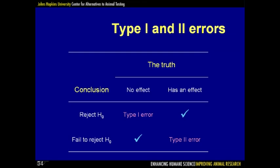Consider this table. The truth may be either that salt water has no effect or that it does have an effect, and there are two possible conclusions: reject the null hypothesis or fail to reject it. If there's no effect and we reject the null hypothesis, we've made a type 1 error. If there's no effect and we fail to reject the null, we're happy. If there is an effect and we reject the null, we're also happy. If there is an effect but we fail to reject the null hypothesis, we've made a type 2 error.